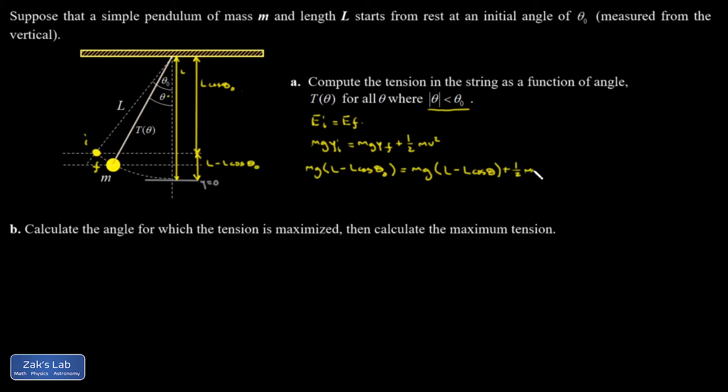Then plus one-half mv squared. What I'm going to do here is solve for v and then get into the circular motion analysis. Notice that m cancels. Also, when I distribute the g's over these L minus L cosine theta terms, I get a gL on both sides and those are going to cancel. I want to move everything to the left-hand side so I can isolate v. I have a negative gL cosine theta on the right-hand side. I'm going to add that to the left-hand side. It gives me a gL cosine theta.